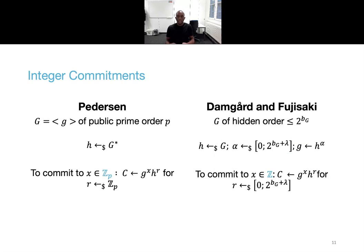Now to commit to an integer x instead of the residue class modulo p, one first chooses randomness r from a set of integers with size at least 2 times lambda times the group order. This is to make sure that the statistical distance between any two commitments is at most 2 to the minus lambda. The rest of the computation is just like for Pedersen's scheme.